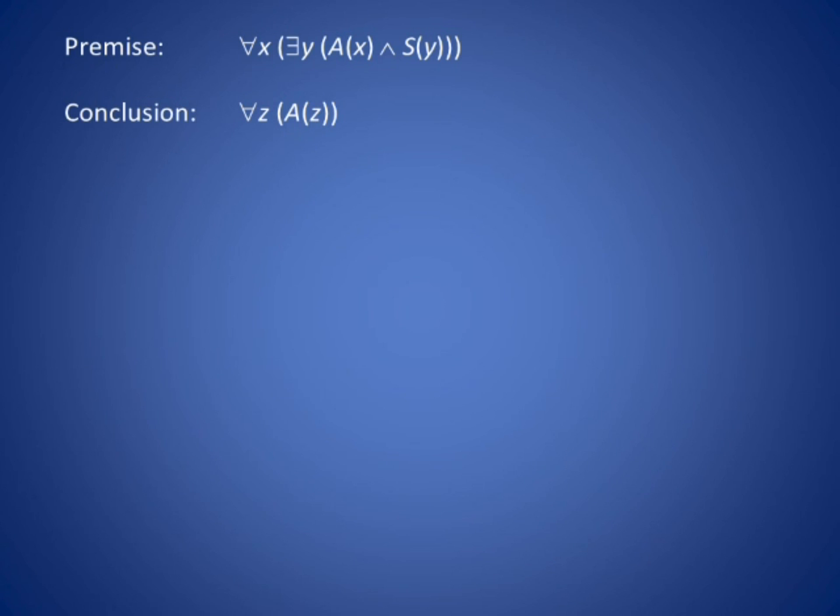Once again, symbolically, the premise is for all x, there exists a y such that A of x and S of y. The conclusion is for all z, A of z.